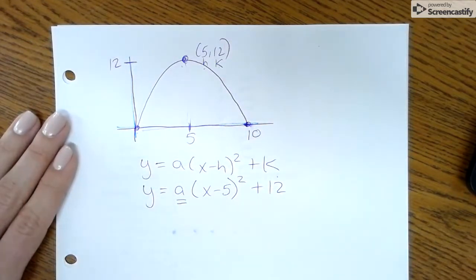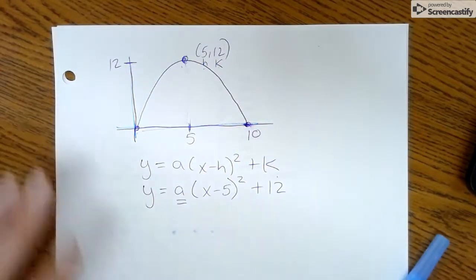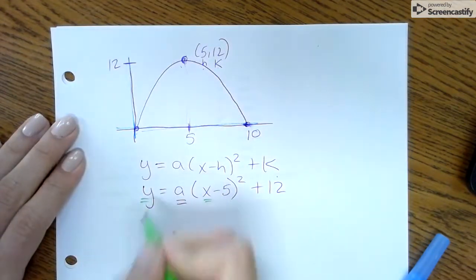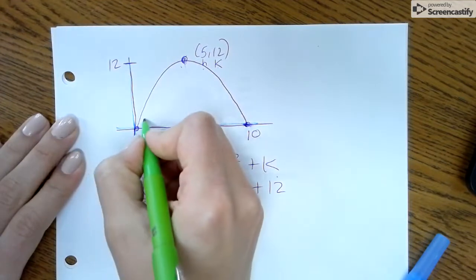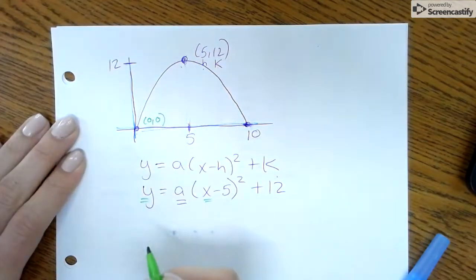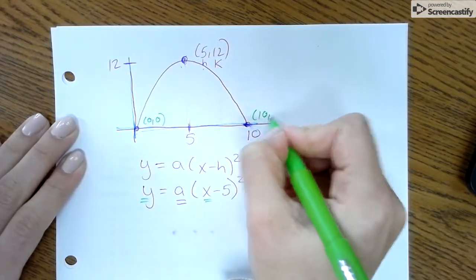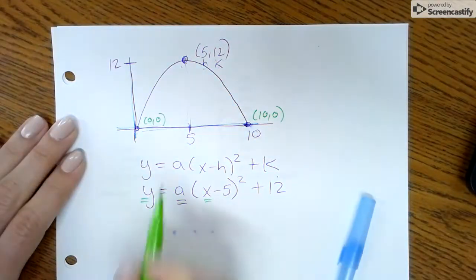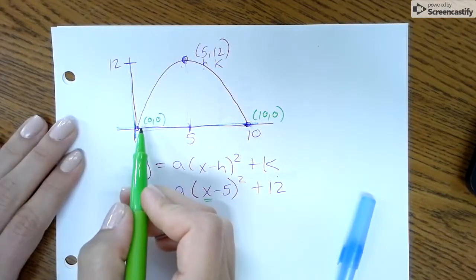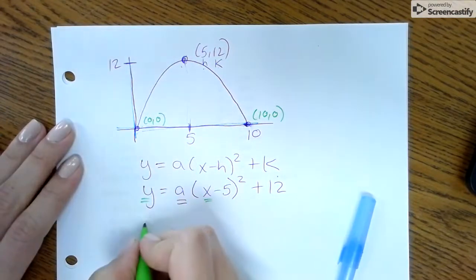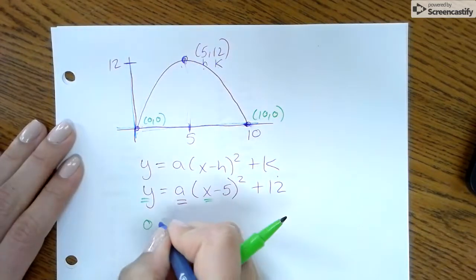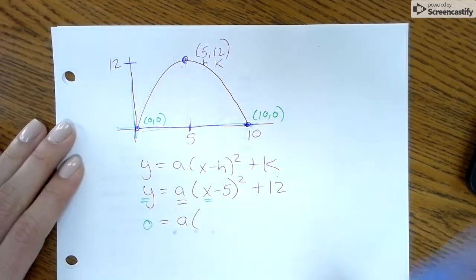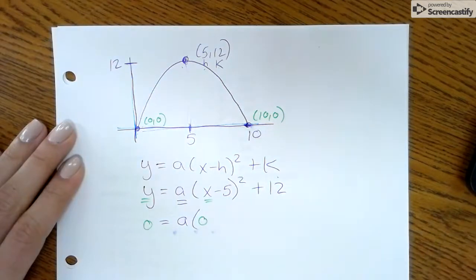Okay, so this is where you have to pick one of the other points you know and plug it in for x and y. We know this point here is (0,0) for sure, and we know this other point is (10,0). So I usually pick the easier one, which I think is (0,0), but it doesn't matter. So I'm going to plug in zero for y and zero for x.